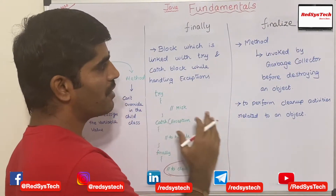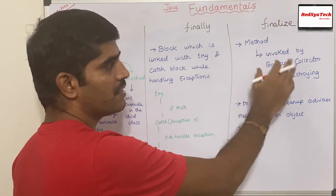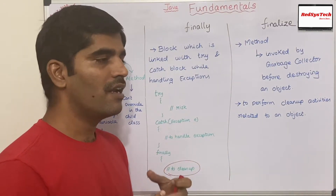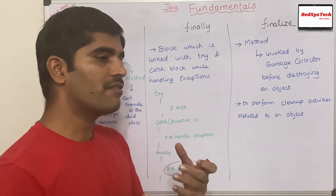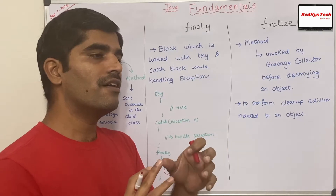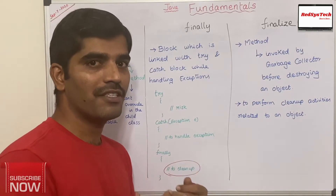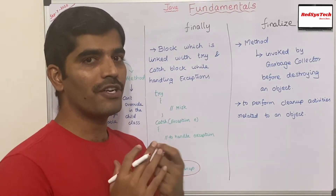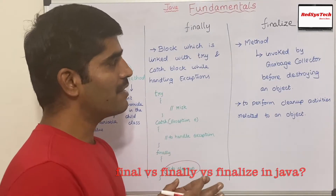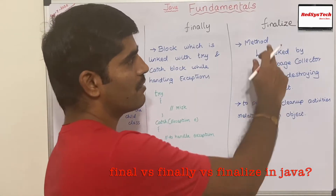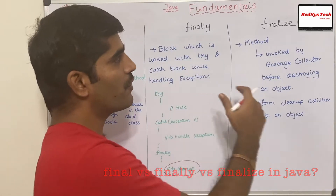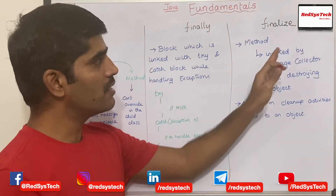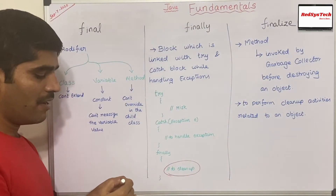Finalize is the method invoked by the garbage collector before destroying an object. Let's say one object was referenced by an object reference, but for some reason it is no longer referenced by any object reference in the stack, and that object has been sitting in the heap for a long time. In that case, the garbage collector takes note of that object and destroys it — like a cleanup activity. But before cleaning up that object, it calls the finalize method. Every object has that finalize method, and it is called to perform cleanup activities before the object is destroyed.